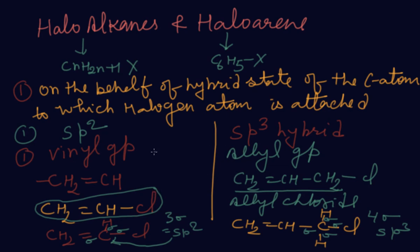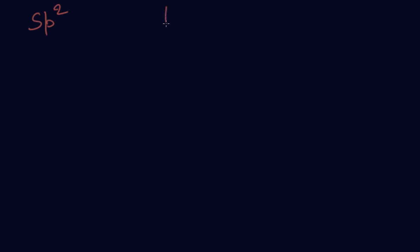In SP3 we consider the allyl group: CH₂=CH–CH₂–, then attach chlorine to get allyl chloride. Now next, I will take the example of SP2 and SP3 in aromatic hydrocarbons. For SP2 in aromatics, the halogen atom is attached directly on the double bond. For SP3, the halogen is on the carbon next to the ring.